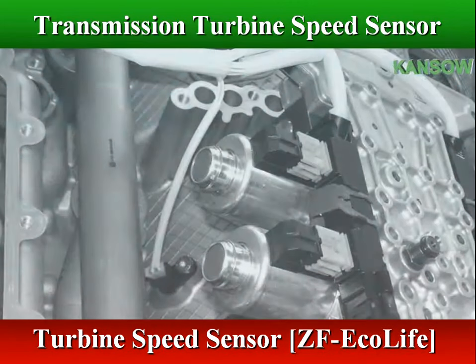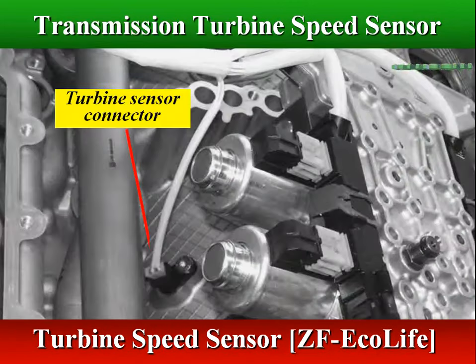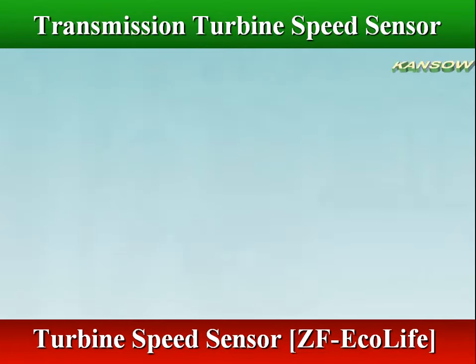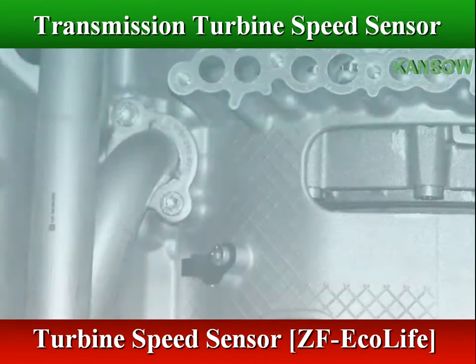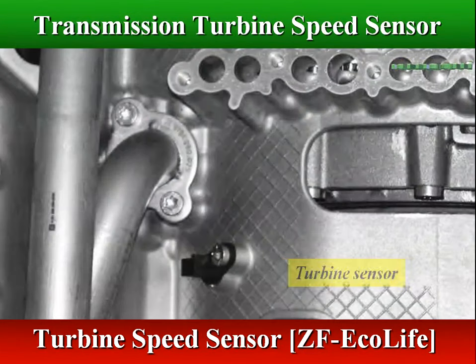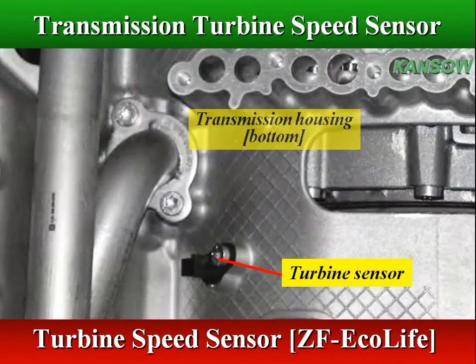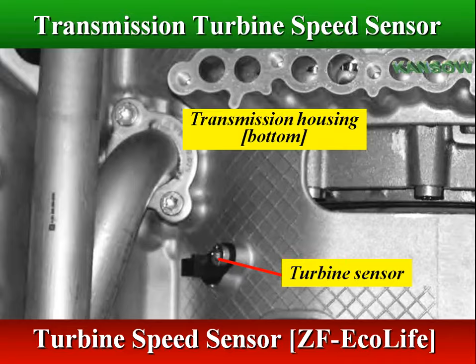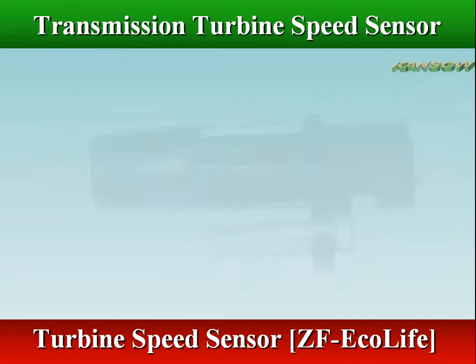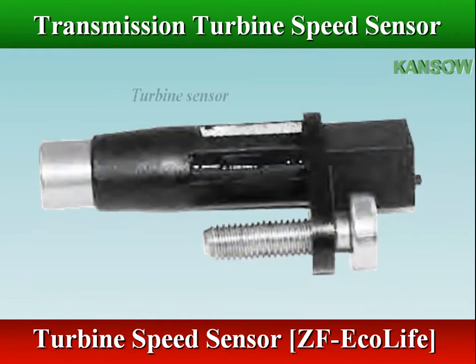In ZF ECOMAT 2 transmissions, the turbine speed sensor is internally mounted in the bottom of the transmission housing and directed at the pulse transmitter ring attached to the hub of the clutch carrier.